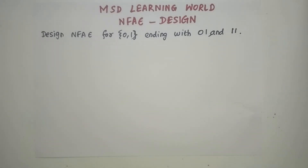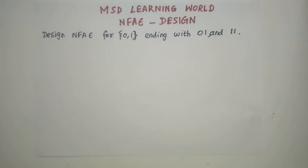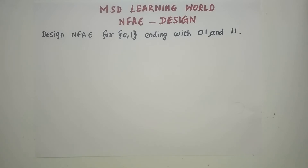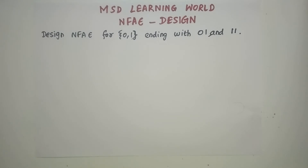This is similar to creating an NFA machine. Along with the creation process of NFA machine, we are just going to include Epsilon transitions alone. The given problem is: design NFA Epsilon for the set of all strings over {0,1} ending with 0,1 and 1,1.